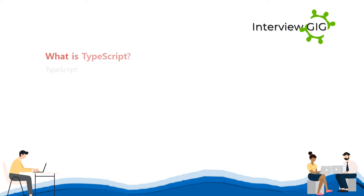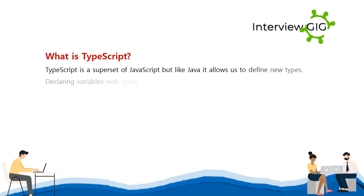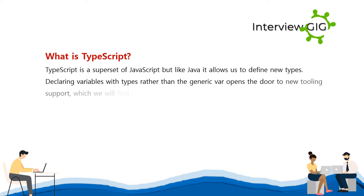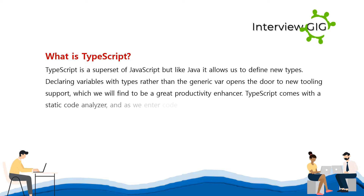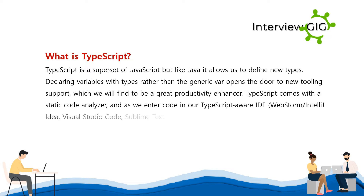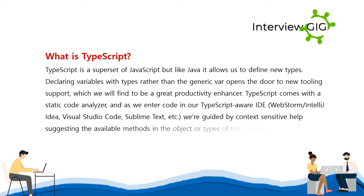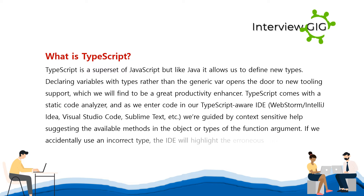What is TypeScript? TypeScript is a superset of JavaScript but, like Java, it allows us to define new types. Declaring variables with types rather than the generic var opens the door to new tooling support, which is a great productivity enhancer. TypeScript comes with a static code analyzer, and as we enter code in a TypeScript-aware IDE — WebStorm, IntelliJ IDEA, Visual Studio Code, Sublime Text, etc. — we are guided by context-sensitive help suggesting available methods and types. If we accidentally use an incorrect type, the IDE will highlight the erroneous code.